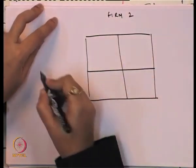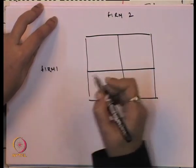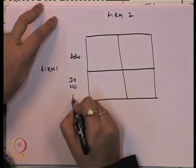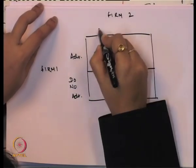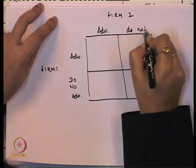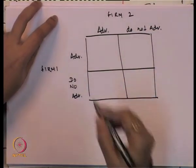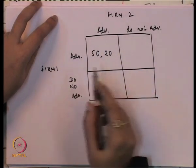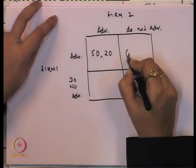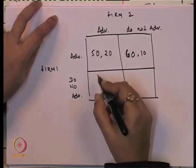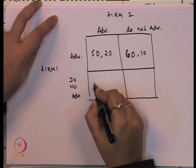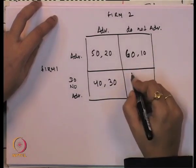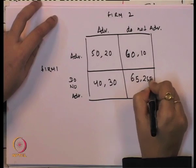We will take the case of firm 2 here. We have the options: advertise and do not advertise. When both firms are advertising, firm 1 gets a share of 50 and firm 2 gets a share of 20. When firm 1 advertises and firm 2 is not advertising, firm 1 gets 60 and firm 2 gets 10. When firm 2 is advertising and firm 1 is not advertising, firm 1 gets 40 and firm 2 gets 30. When both are not advertising, they get a payoff of 65 and 25.